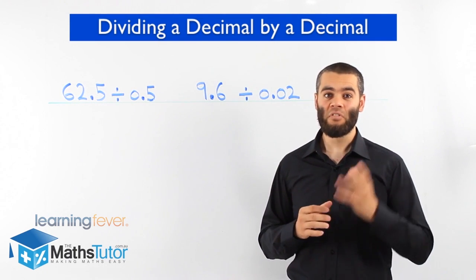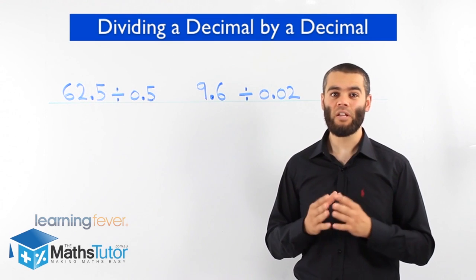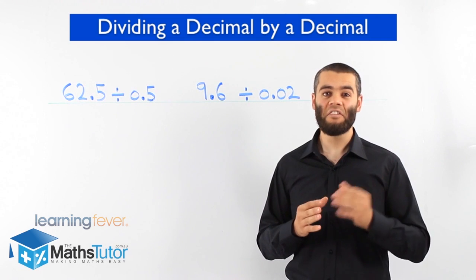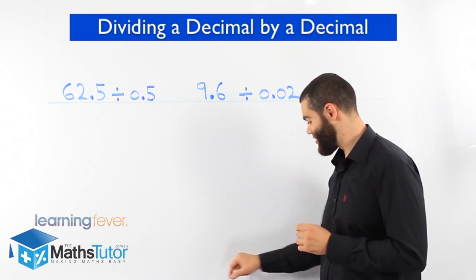Simple. Since we can't divide a decimal by a decimal, we have a trick. We change it so we can actually divide a decimal by a whole number. I'll show you how it's done. Let's do it.